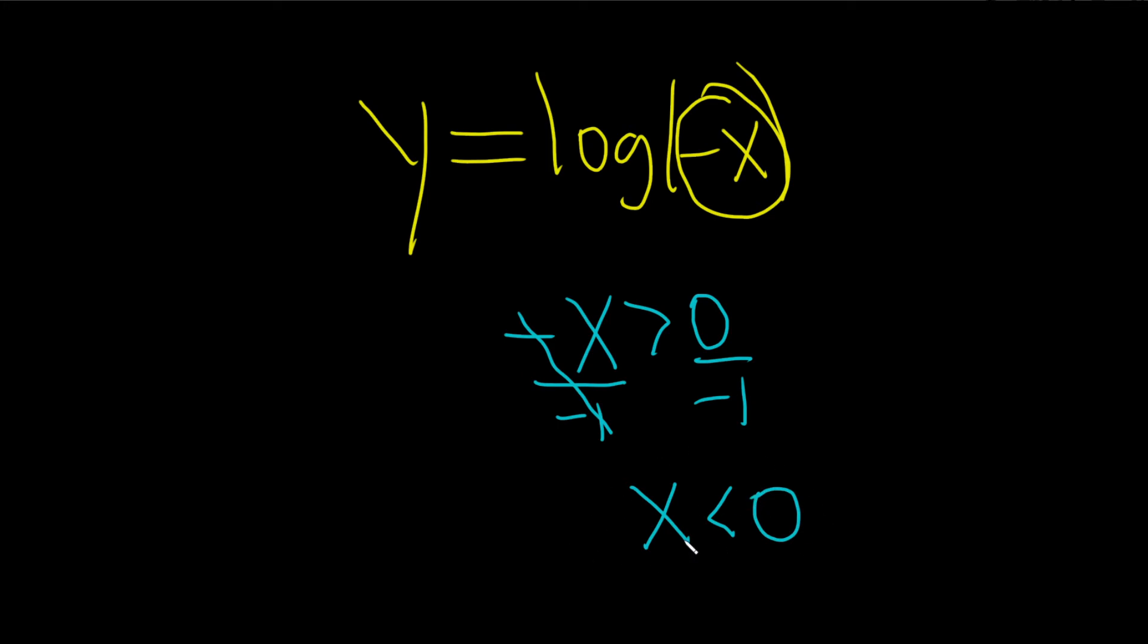The domain is all of the x's that satisfy this condition. Let's draw a picture. Here's zero and we want all of the x's that are less than zero, so all of the ones over here.